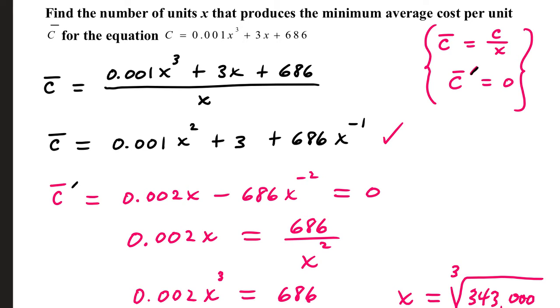we multiply 0.001 times 2, take 1 off the power. 3 is a constant, so its derivative is 0. 686 times negative 1 is negative 686. Take 1 off your power, and that makes a negative 2. On the next step, I'm going to bring this negative 686x to the negative 2 over to the right, which will make it positive, and also move this term to the denominator, making the 2 positive.